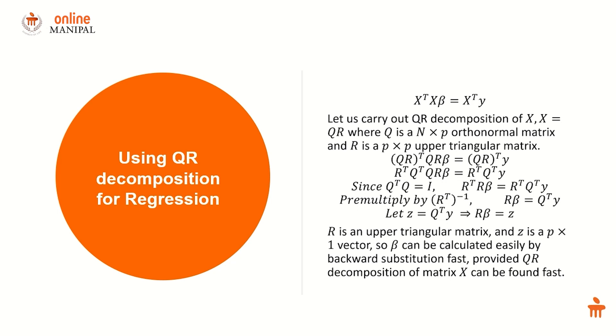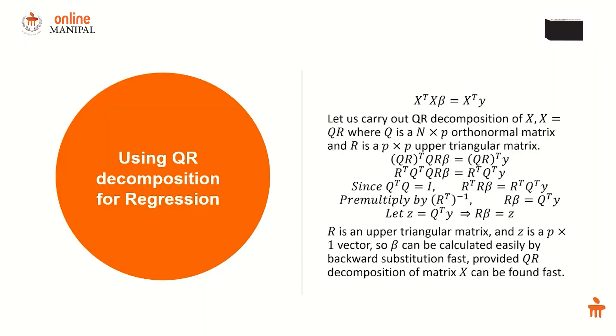Since Q is an orthonormal matrix, q transpose q equals I. When I substitute this, I can write the whole regression system as r transpose r beta equals r transpose q transpose y. Then I do pre-multiplication with r transpose inverse to get r into beta equals q transpose y.